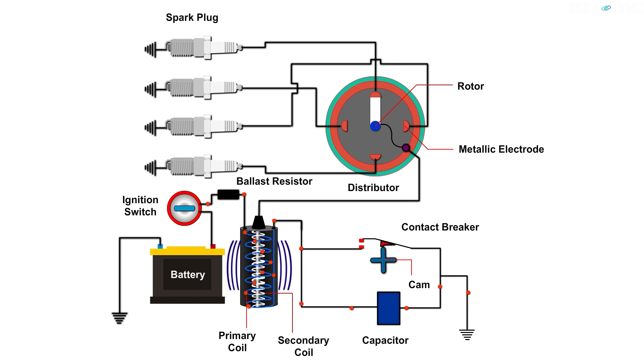As the primary circuit becomes open, the magnetic field around it changes suddenly. This rapid change in the magnetic field induces a very high voltage in the secondary coil due to the law of mutual induction.